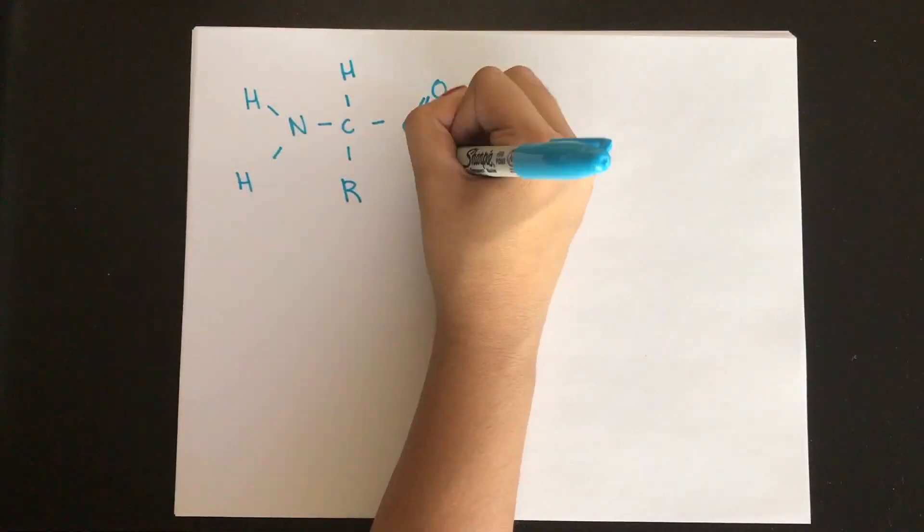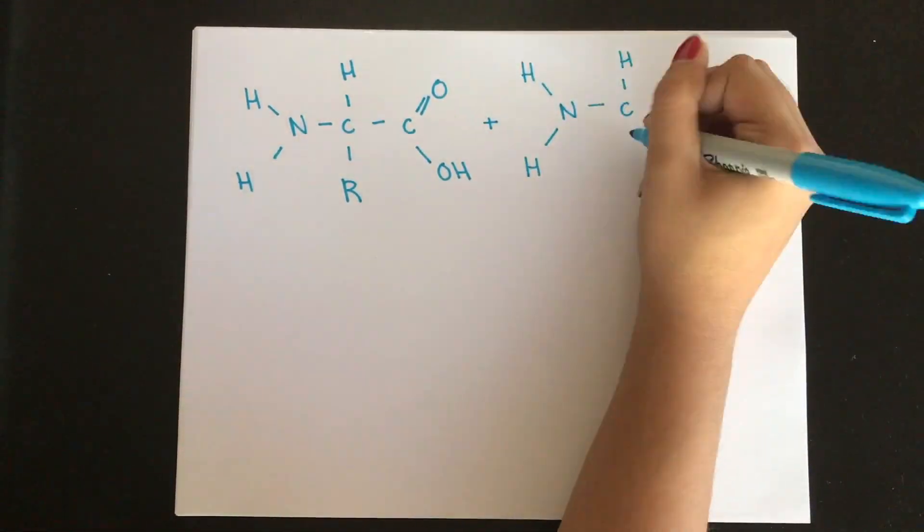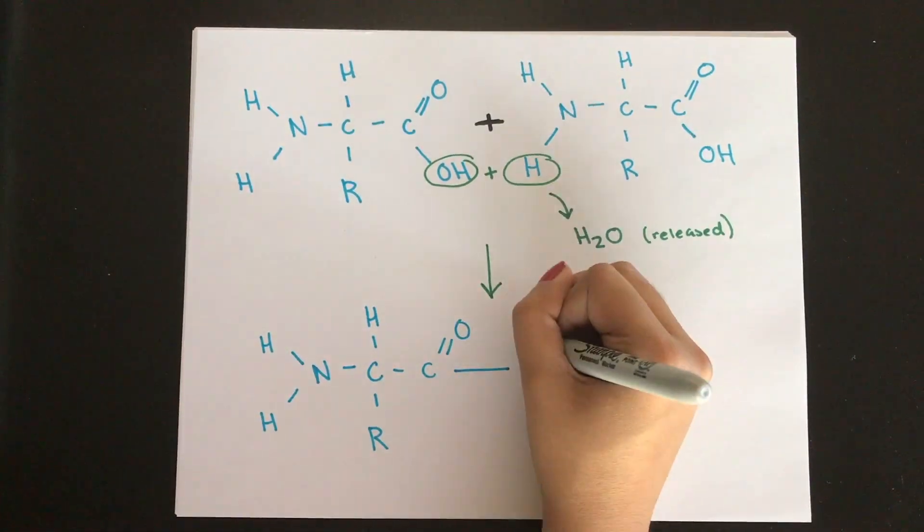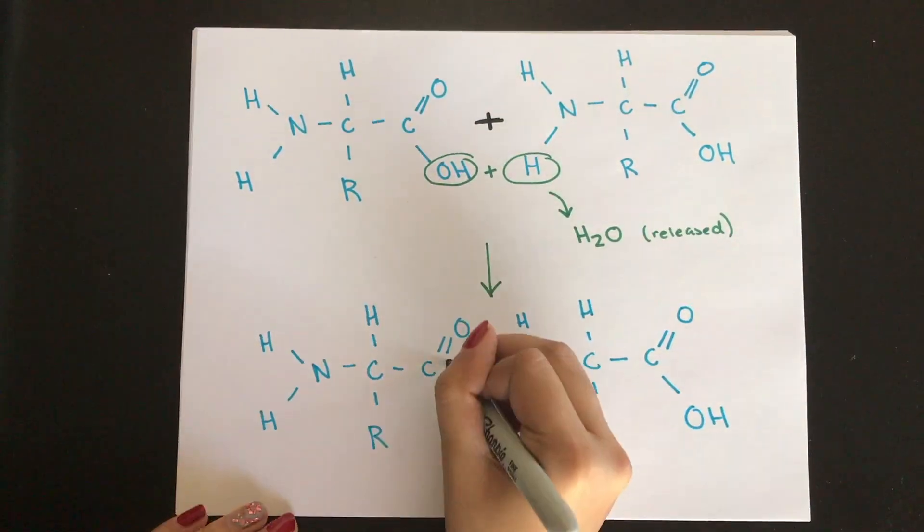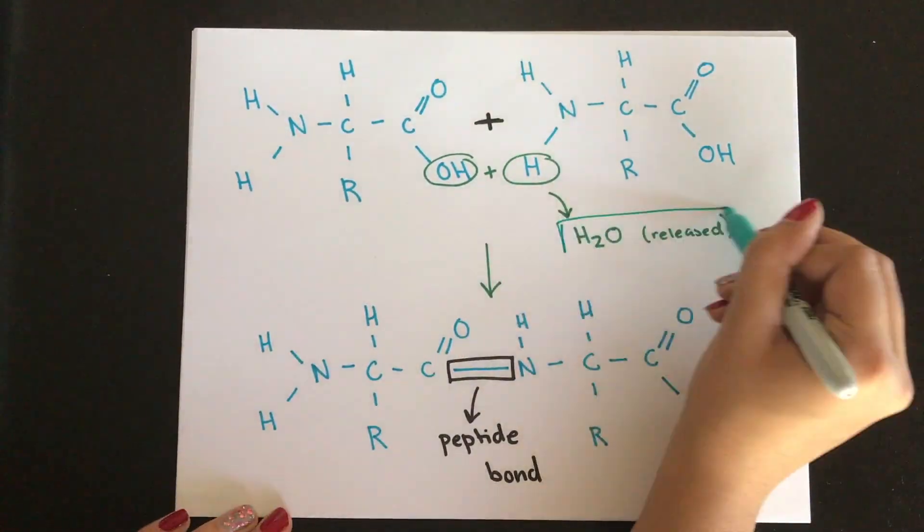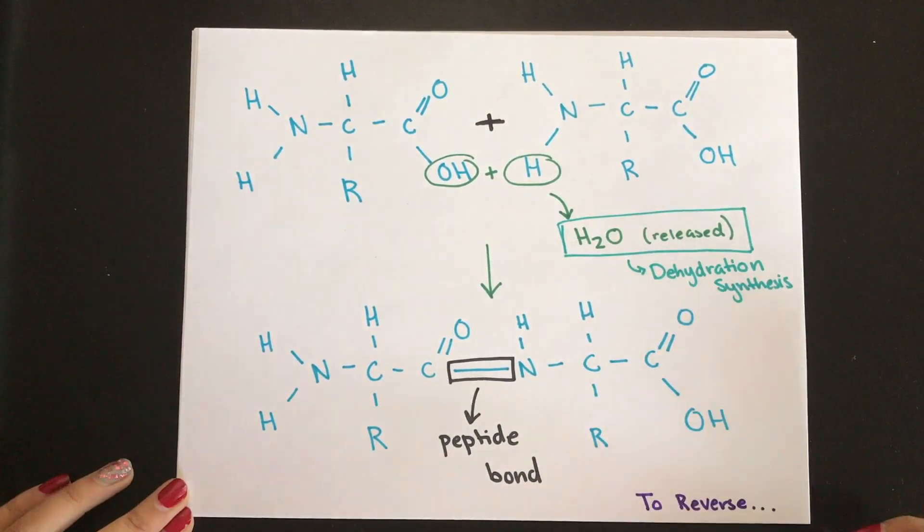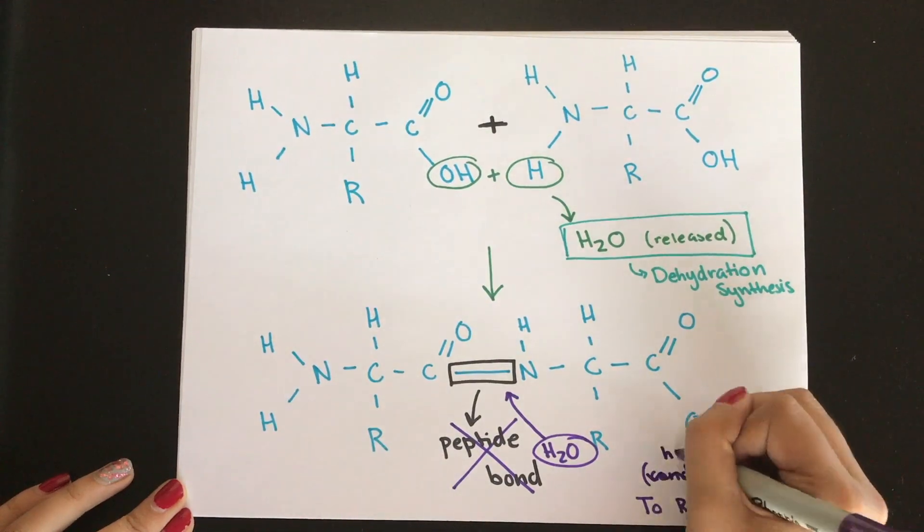Amino acids bond in a chain to form a protein, and they release a water molecule through this process known as dehydration synthesis. During dehydration synthesis, peptide bonds are formed, and that's what holds together this chain of amino acids. Peptide bonds are broken through hydrolysis when a water molecule is added. So hydro, you add the water molecule, lysis, you break something.